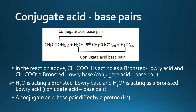H₂O is acting as a Brønsted-Lowry base and H₃O⁺ is acting as a Brønsted-Lowry acid — that's the conjugate acid-base pair. A conjugate acid-base pair differs by a proton, or H⁺. The difference between ethanoic acid and the ethanoate ion is one proton, and the difference between water and the hydronium ion is also one H⁺ ion.